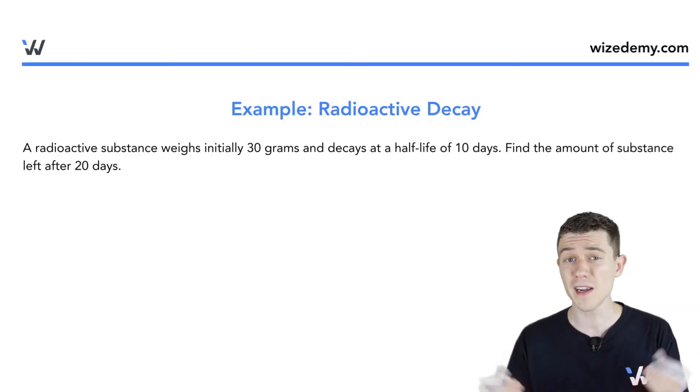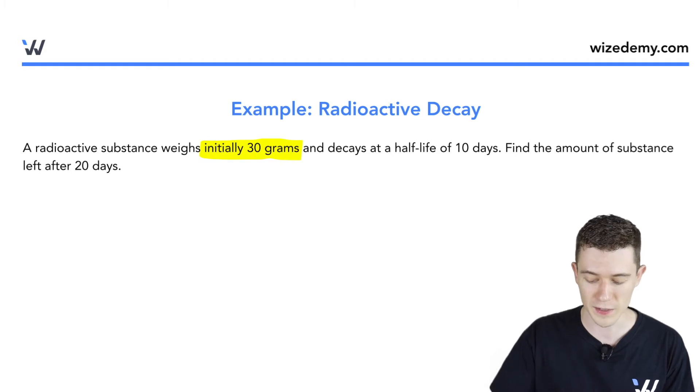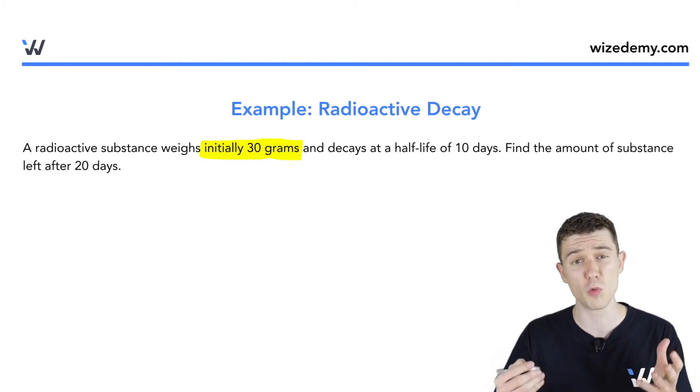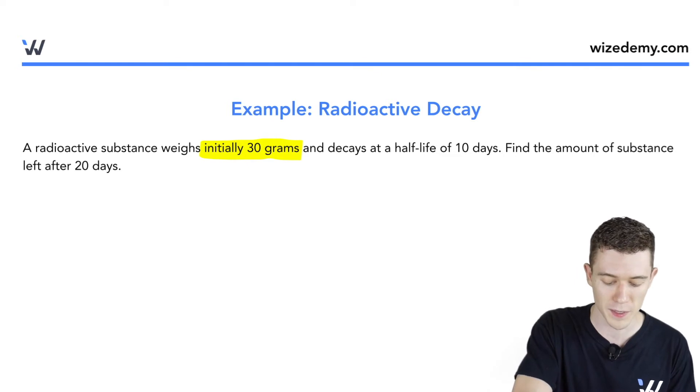We have some radioactive substance which is decaying with a certain half-life, and we have a question about it. Here, this substance initially weighs 30 grams. We'll use the letter y to denote the amount of the substance at time t. So what this means is that y(0), or y initial, equals 30 grams.